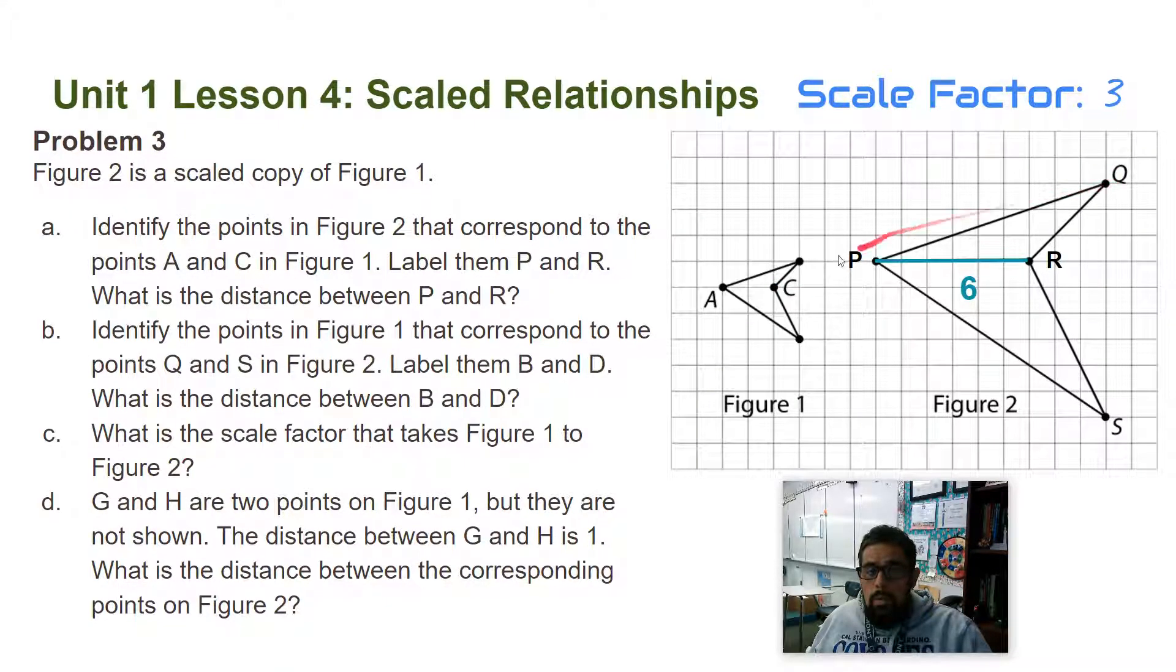Q goes with B, and then S goes with D. So those are the corresponding parts there. And the second part: what is the distance between B and D? You can see it right here, counting it: one, two, three.